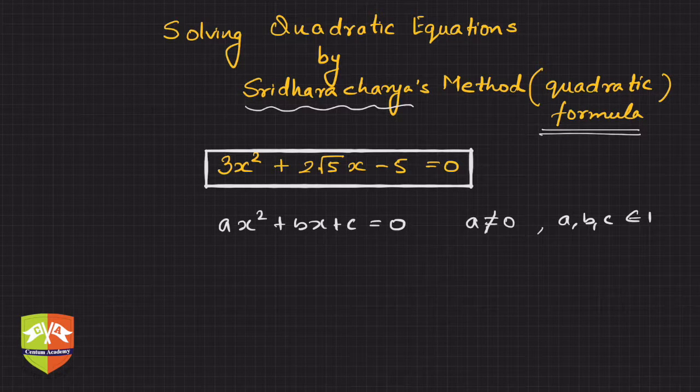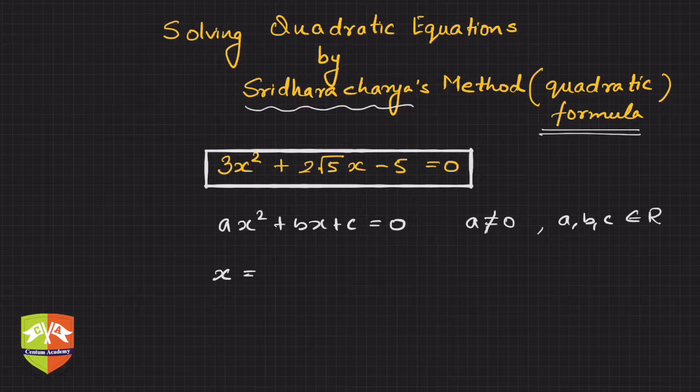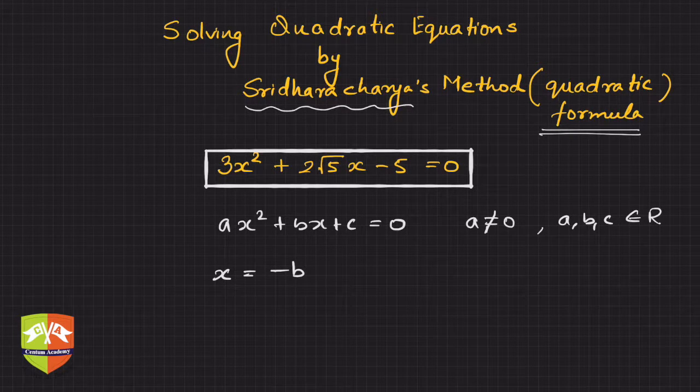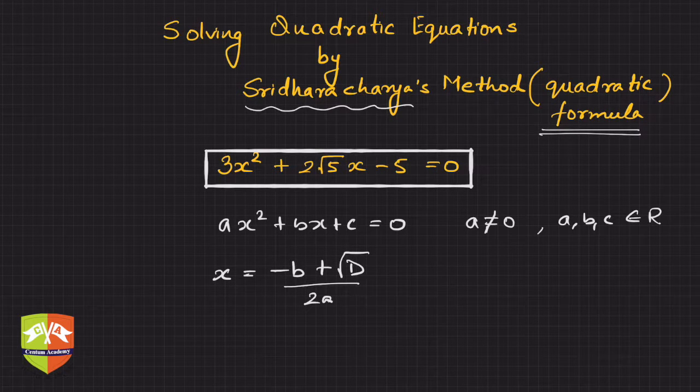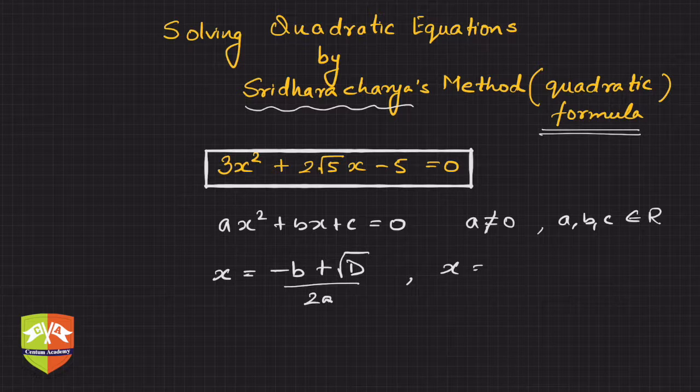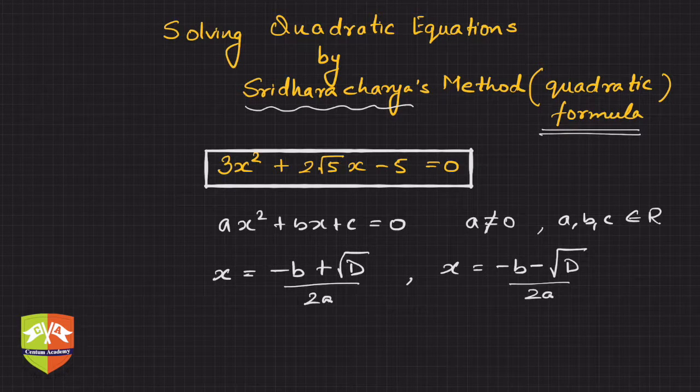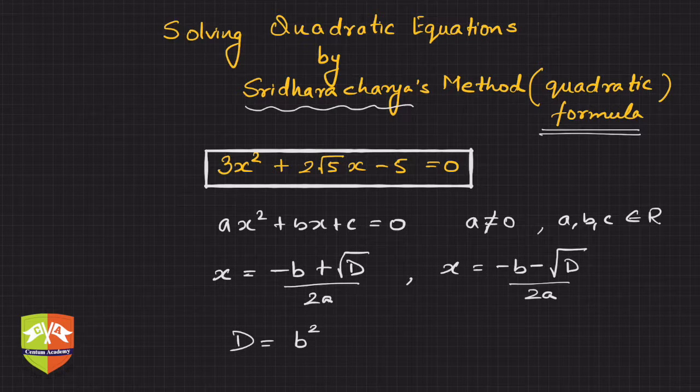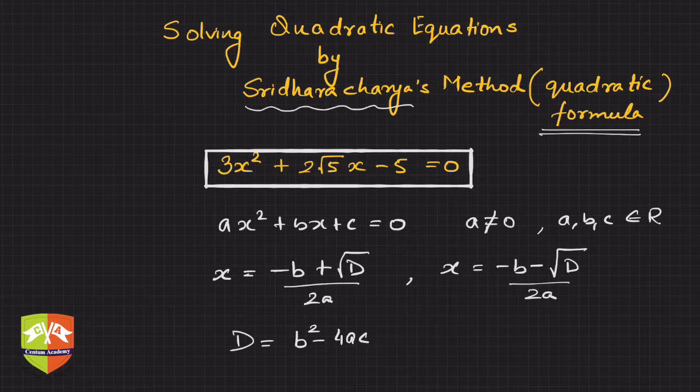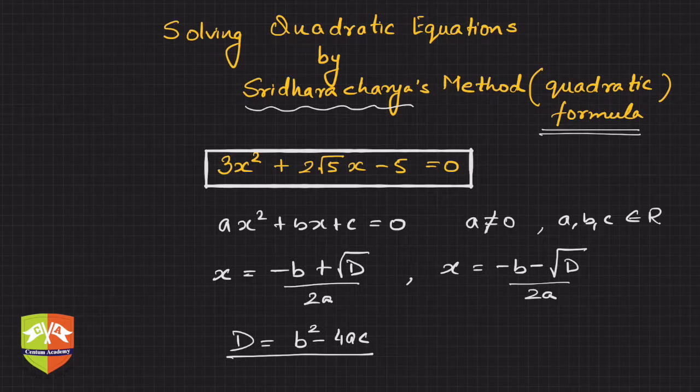then the solution is given by x = (-b + √D)/(2a) and another solution is x = (-b - √D)/(2a), where D = b² - 4ac. We will talk about the nature of roots in a later session.